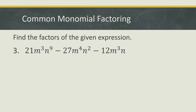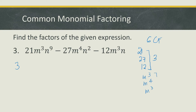Let's try the third example. Find the factors of: 21m cubed n to the 9th minus 27m to the 4th n squared minus 12m cubed n. The GCF of the coefficients 21, 27, and 12 is 3. For variable m: we have m cubed, m to the 4th, and m cubed — the smallest exponent is 3, so the common factor is m cubed. For variable n: we have n to the 9th, n squared, and n — the smallest exponent is 1, so the common factor is n. Our common monomial factor is 3m cubed n.